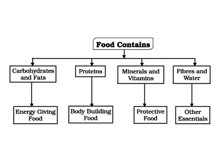So these were the food classes. To summarize: we discussed carbohydrates and fats as energy giving foods, proteins as body building foods, minerals and vitamins as protective foods, and fiber and water as other important classes for the body.